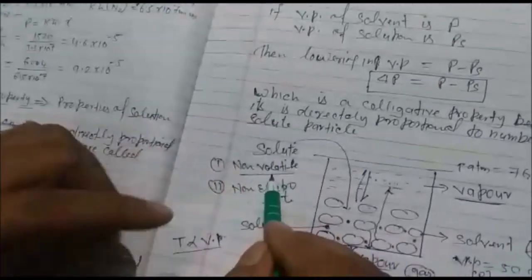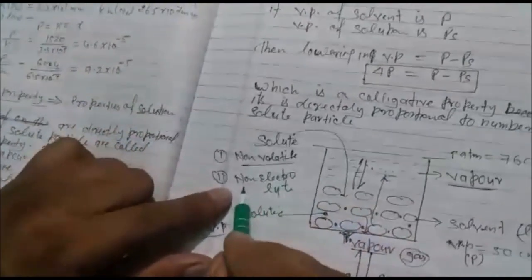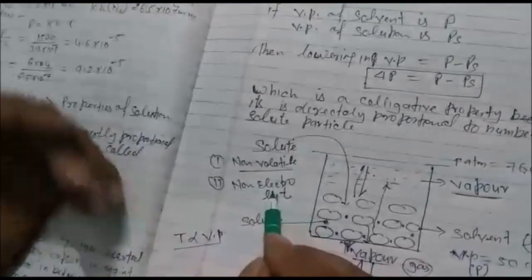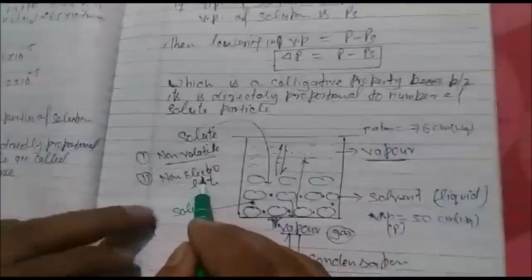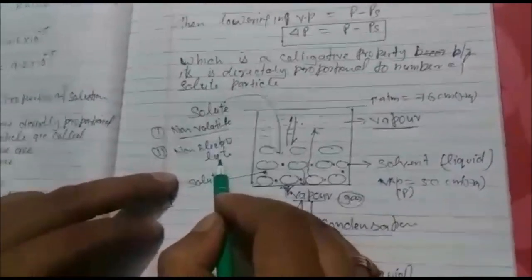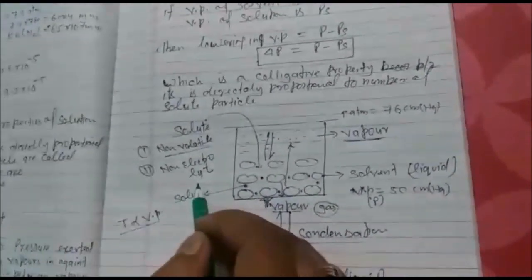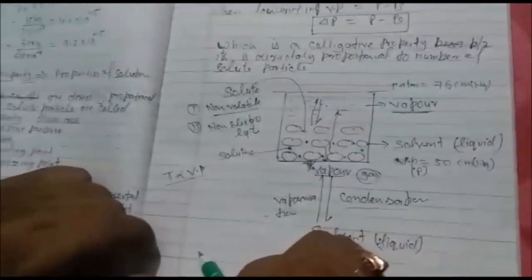Water is volatile because water after heating changes into gas. What is non-electrolyte? Electrolyte substance which can ionize into their ions. So it should be non-electrolyte, like sugar, not NaCl. NaCl is electrolyte. Sugar is non-electrolyte because sugar will not ionize in their solution.